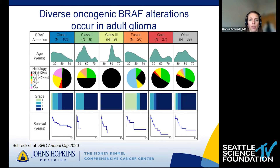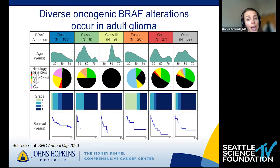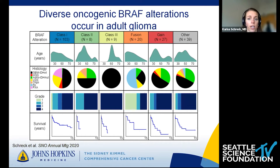Looking at about 300 adults with BRAF mutations, we see a lot of BRAF V600E mutations, but also class 2, class 3, and fusions in adults, as well as gains and other mutations of unclear significance. Some fusions were identified in glioblastoma or high-grade astrocytoma, not just in pilocytic astrocytomas. So it's important to look and ask the question if we're going to have a therapeutic option for these patients.